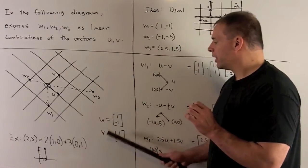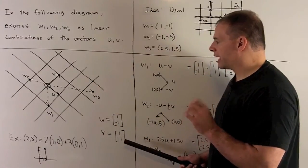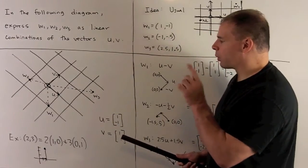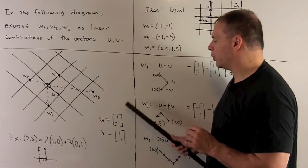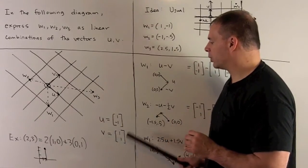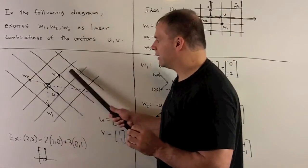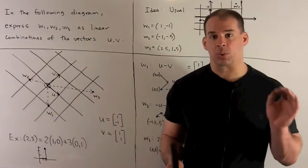For our u and v, they're going to form a basis. And just to put some numbers to what we're working with, let's call u equal to (1, -1), v equal to (1, 1). So this is how u and v live relative to each other in the x, y plane.